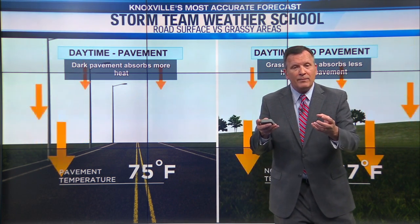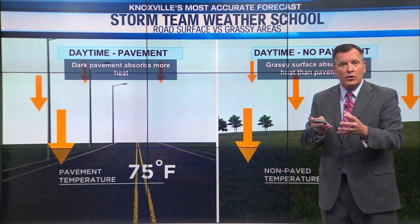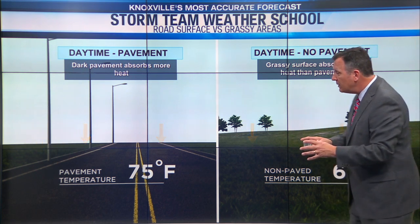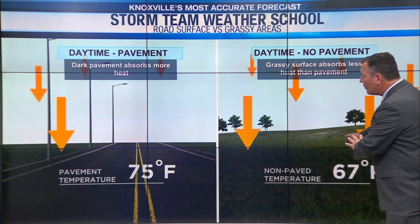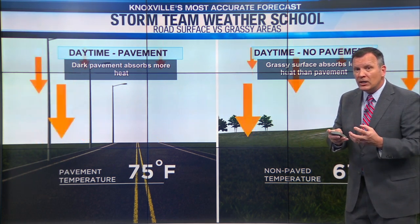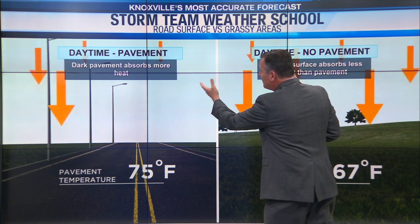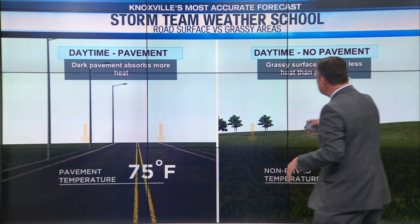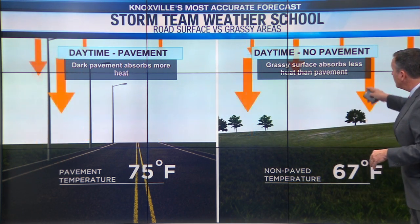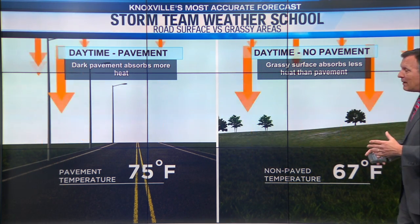That's because the pavement holds the warmth — it absorbs it and holds it. Meanwhile, the grass does not absorb as much of that warmth. So the dark pavement absorbs more heat, while grassy surfaces absorb less heat than the pavement.